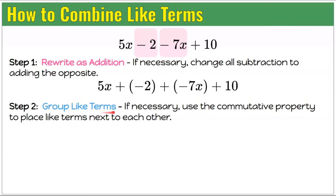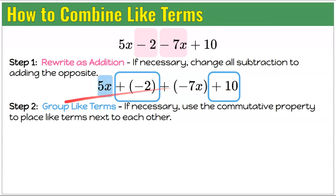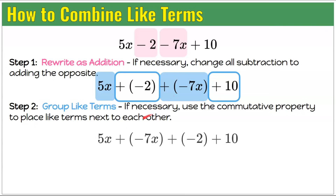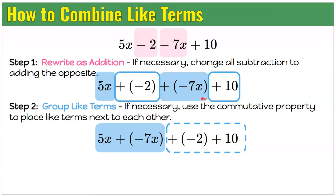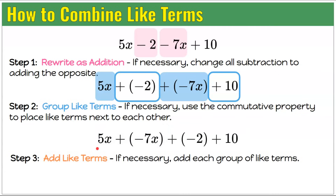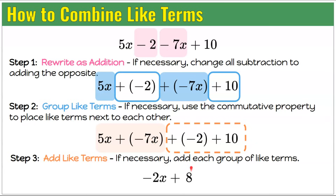Step 2: group like terms using the commutative property. Since we have repeated addition, the order doesn't matter. Put 5x and negative 7x together, and negative 2 and 10 together. Step 3: add like terms. 5x and negative 7x give negative 2x. Negative 2 plus 10 is positive 8. So negative 2x add 8 is equivalent to the original expression and is in simplest form — no like terms and no parentheses.